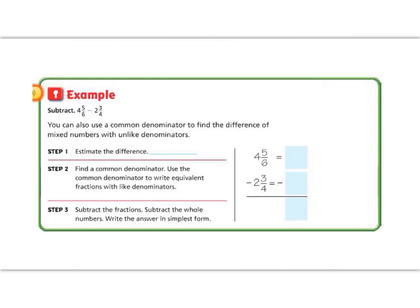All right, now let's try an example with subtracting. When we subtract, we still need a common denominator. So let's look. Do we have a common denominator, 6 and 4? No, we do not. So we are going to use a common denominator in order to subtract. Before we do that, let's estimate.